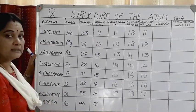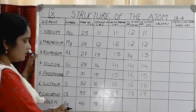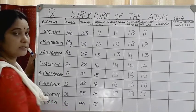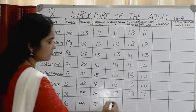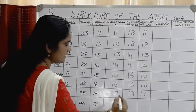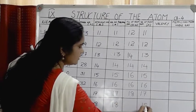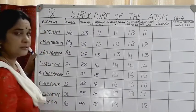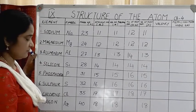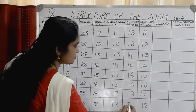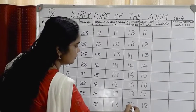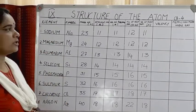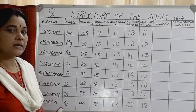The 18th element is argon, a noble gas, with mass number 40 and atomic number 18. Number of protons = 18, number of electrons = 18. Number of neutrons = 40 minus 18 = 22. This is how you find the number of protons, neutrons, and electrons present in an atom of any element.